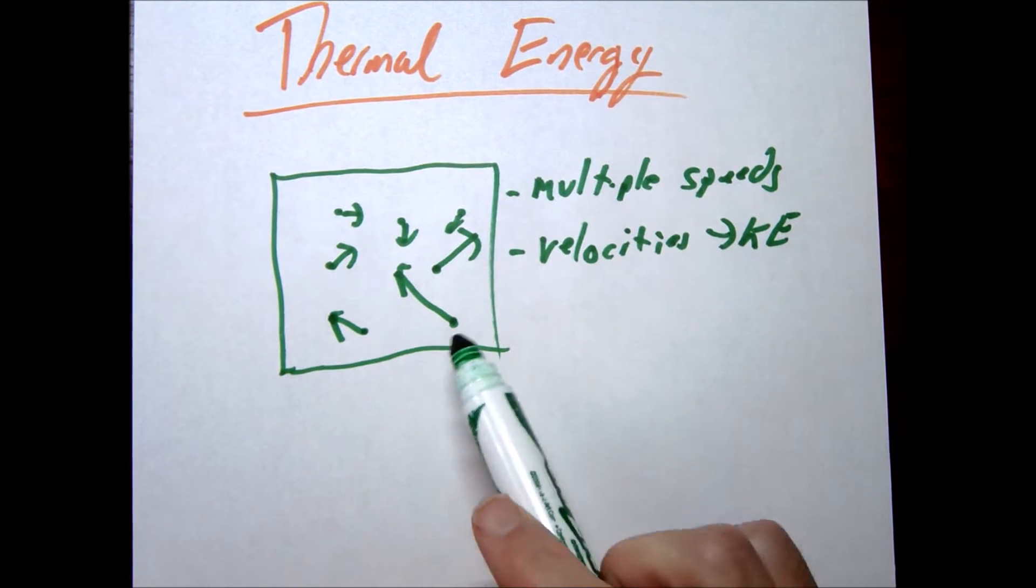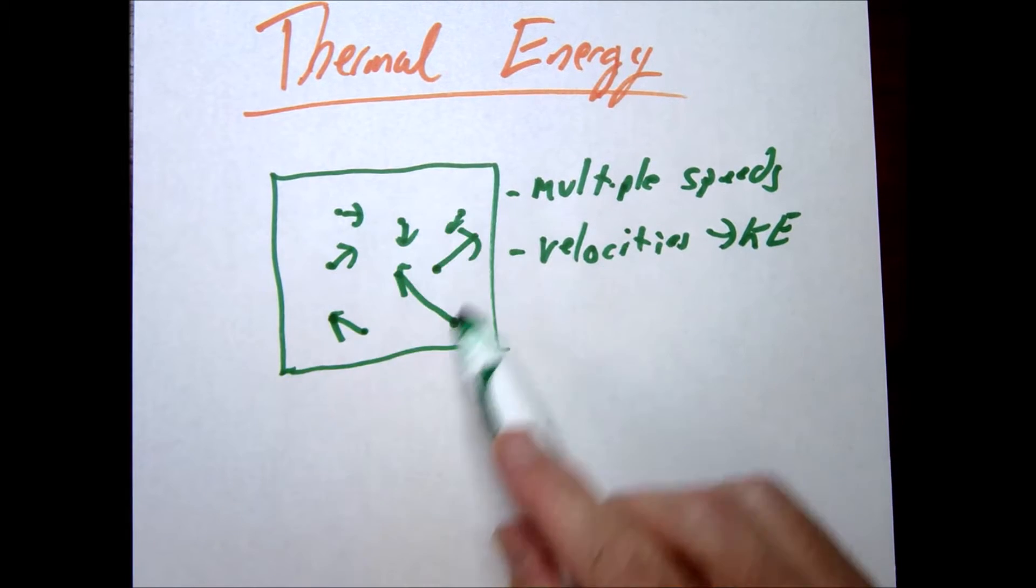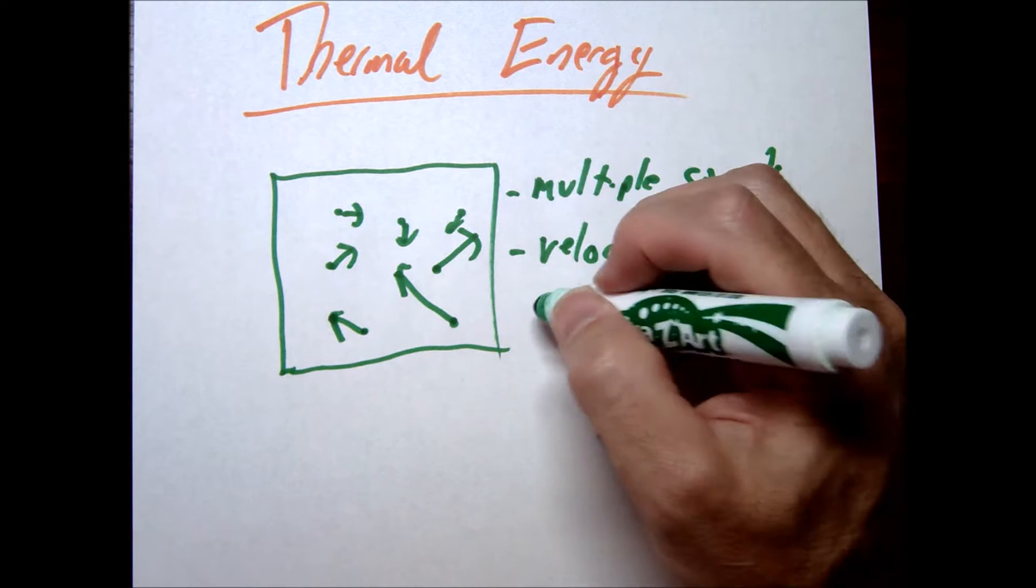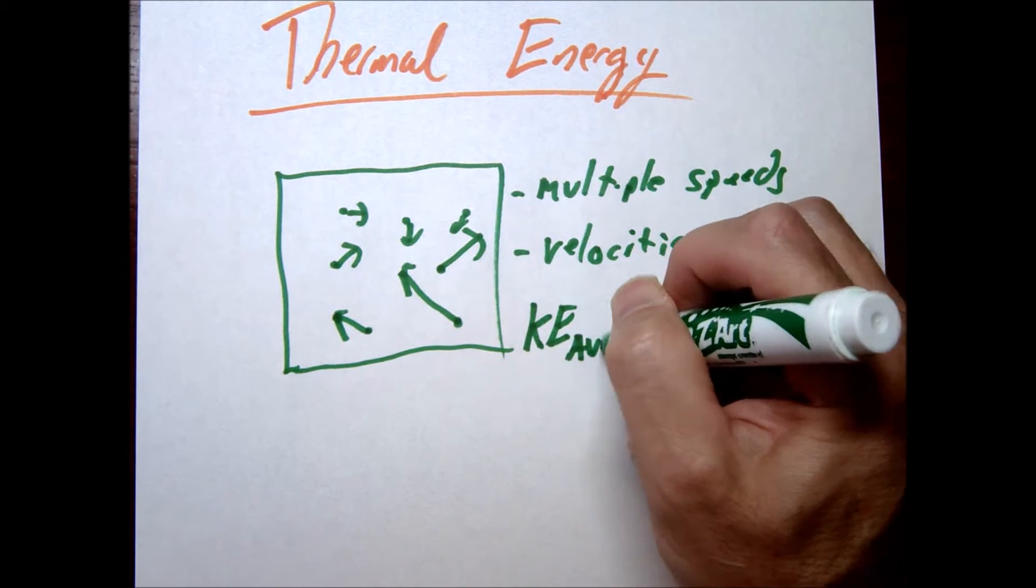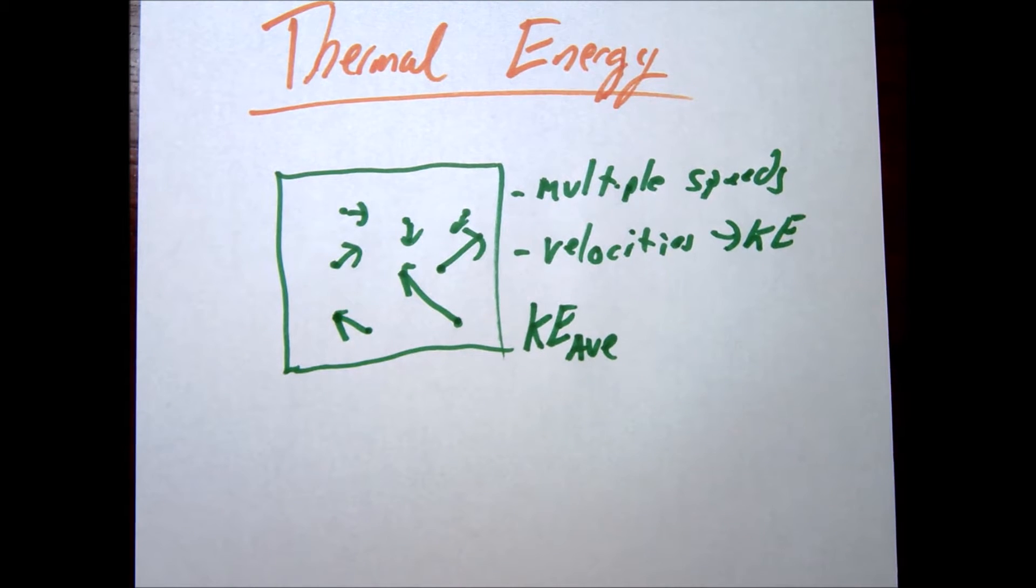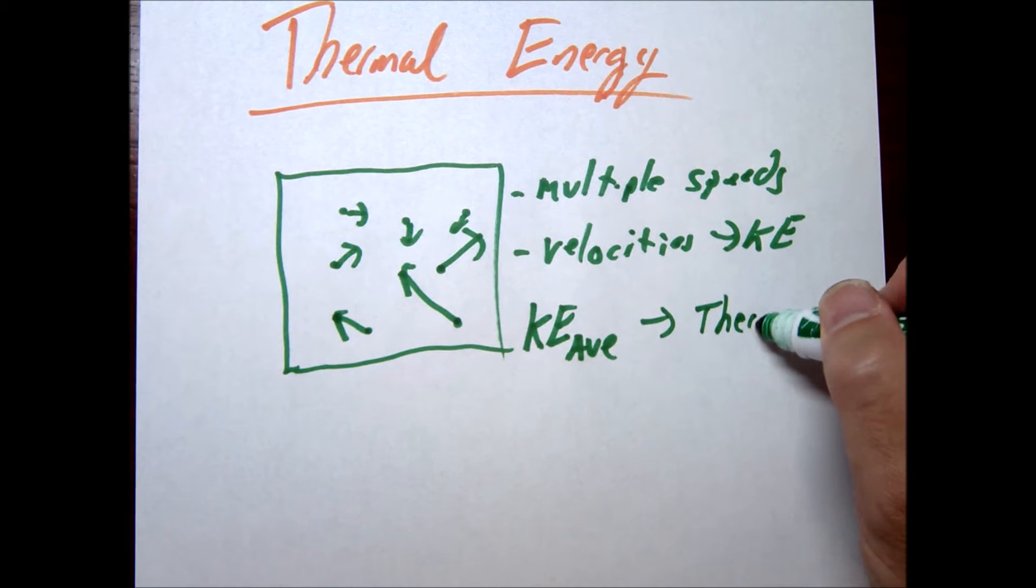So if you were to look at each of these and say oh this has a kinetic energy, this has one, this has one, we could look at this collection of atoms and say there's going to be some average kinetic energy of these atoms. And this is the basic concept of what we mean by thermal energy.